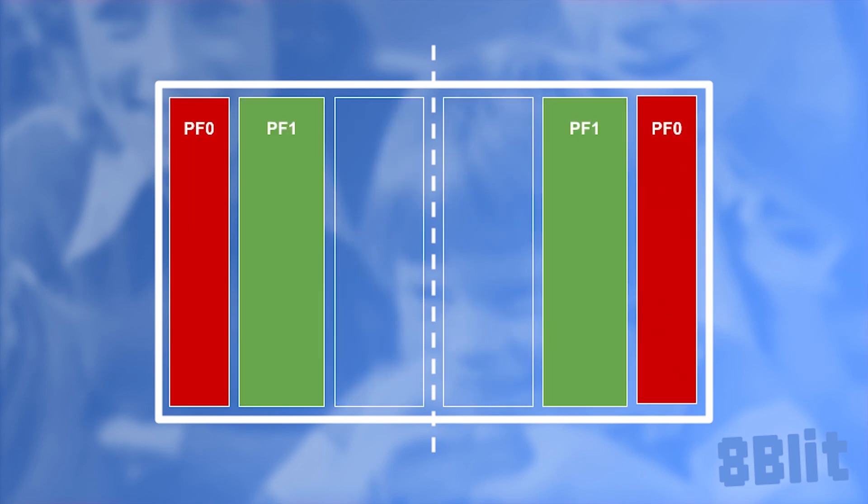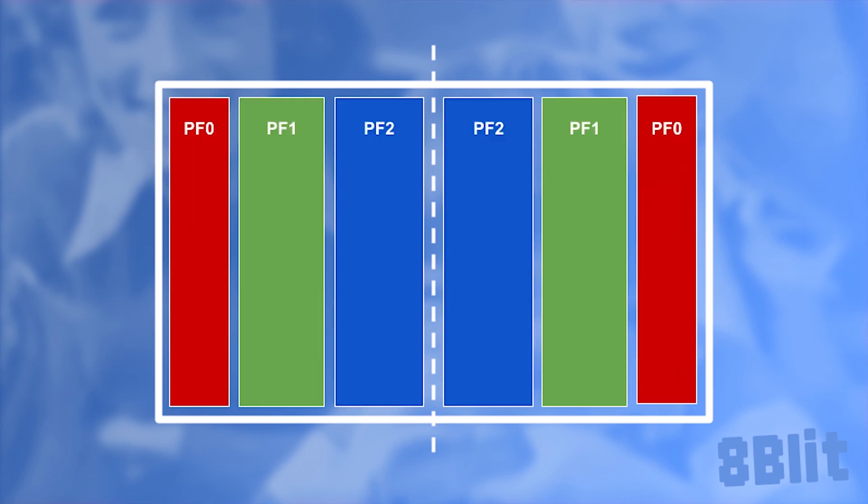Most games will utilize a reflective playfield because it's the most versatile. Normally you would set the playfield registers at the start of your scanline while still in horizontal blank, and then use the rest of your machine cycles for other game logic. But what if you didn't want the same pixels on both sides of the screen? What if you want an asymmetric playfield?